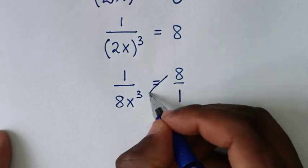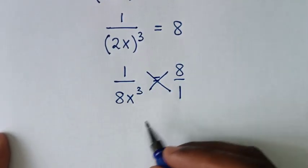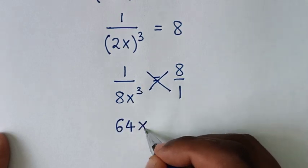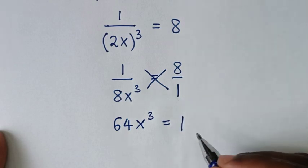Then we'll cross multiply, so we'll take this times this. 8 times 8 is 64, so it will be 64x^3 = 1 times 1, which is 1.